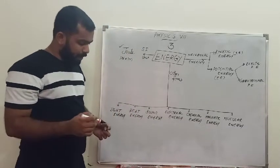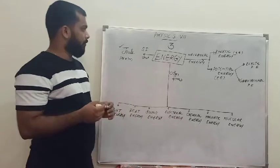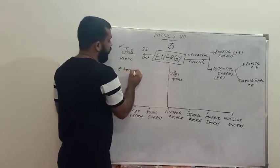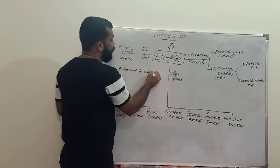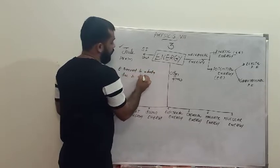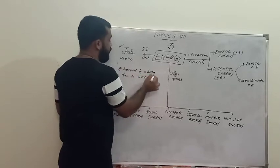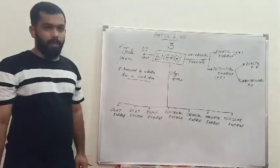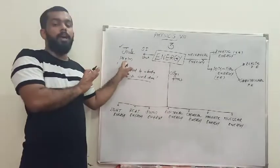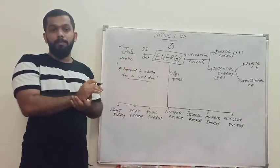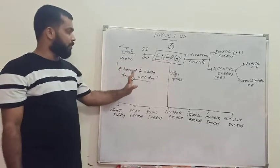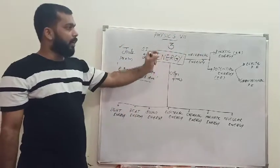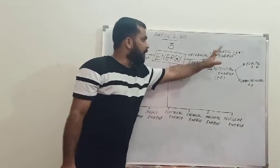What is mechanical energy? The energy possessed by a body due to work done is called mechanical energy. Work means we are applying some amount of force and there is some displacement. The energy possessed by a body due to work done is called mechanical energy, and it has two types: kinetic energy and potential energy.